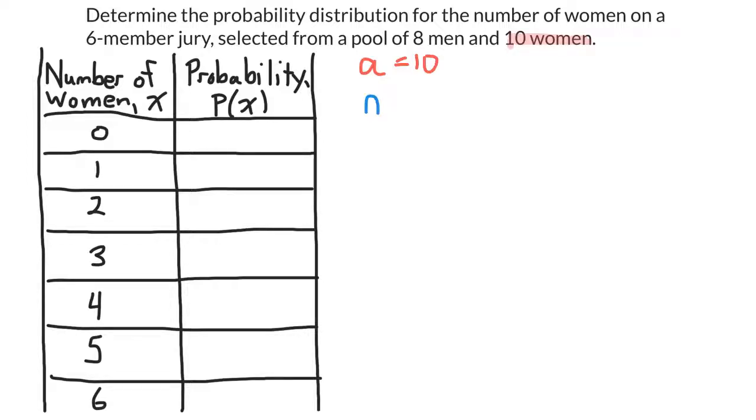N is the number of possible outcomes. Well, there's eight men and ten women, so that means there are eighteen possible outcomes.